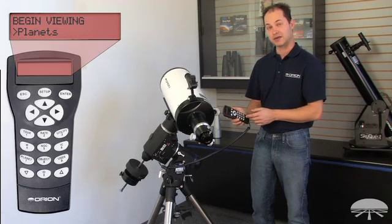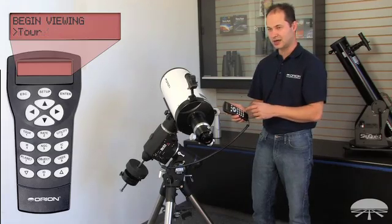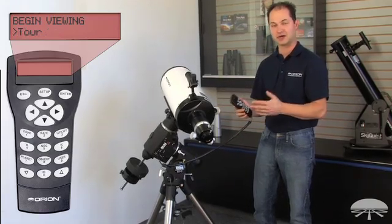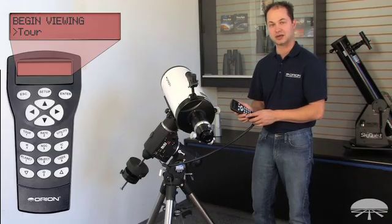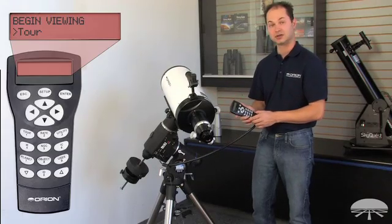If you don't know what you want to look at, there's a tour function here. It will suggest several different objects depending on the time of night and the season that you're in. So you can kind of get a feel for what you want to see.